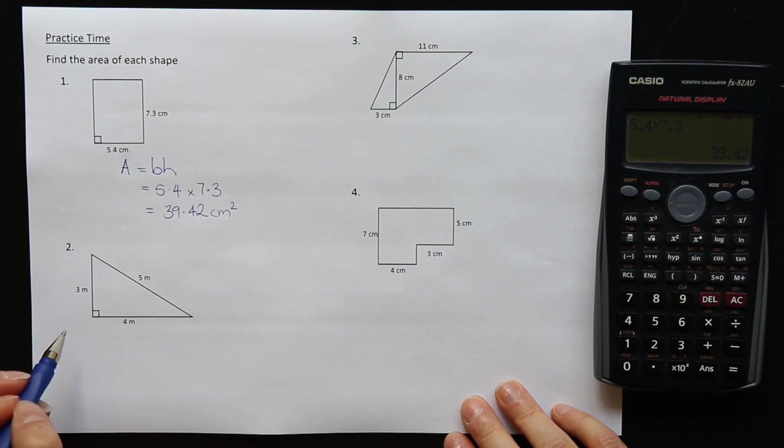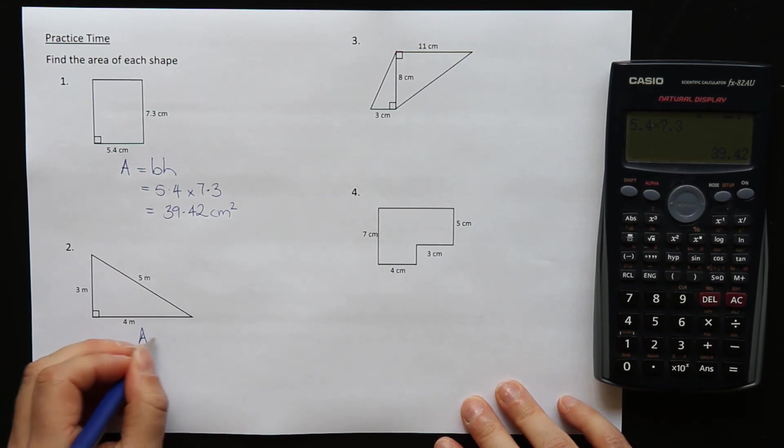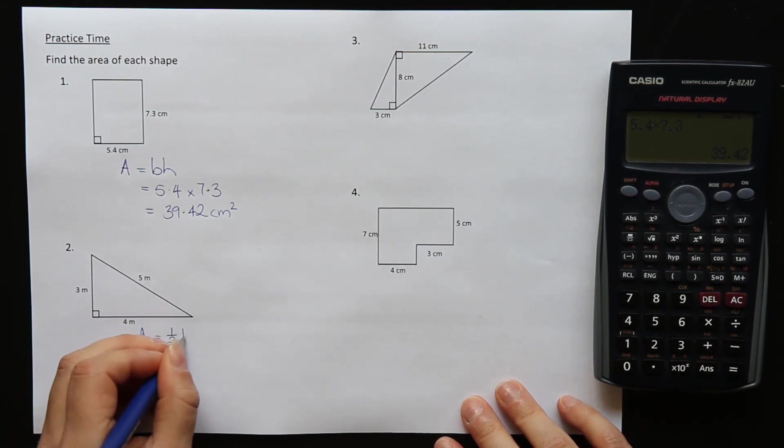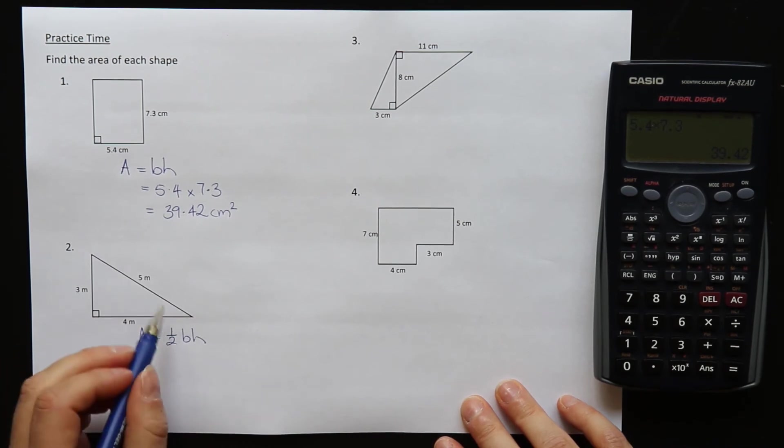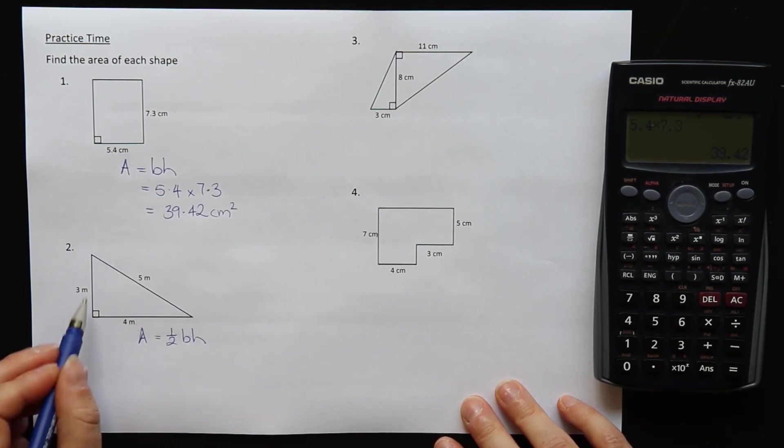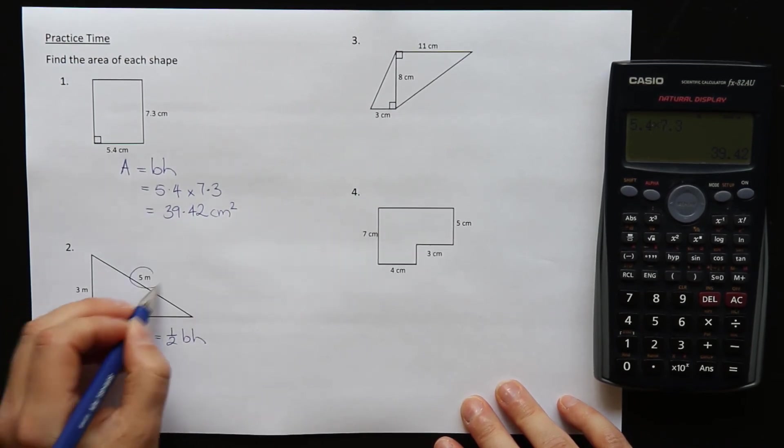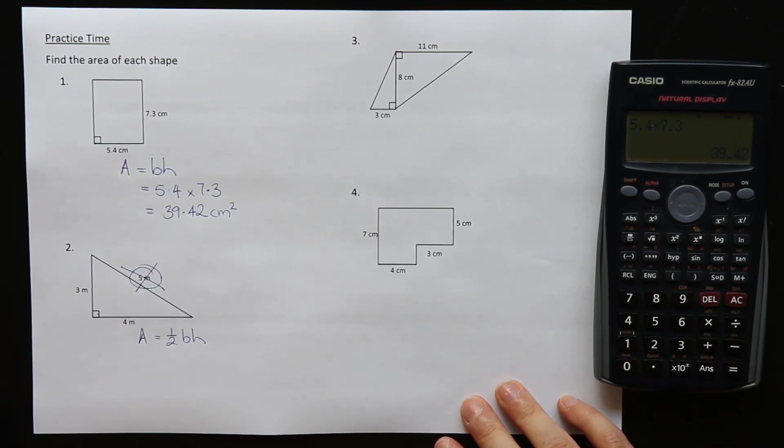In question two we have a triangle. The formula for a triangle is half base times height. Now remember I said before the base and the height are the ones connected by the right angle. So this one here is actually not needed. It's just there to try and trick you. We need the 3 and the 4. So half times the base times the height and that is equal to 6 meters squared.